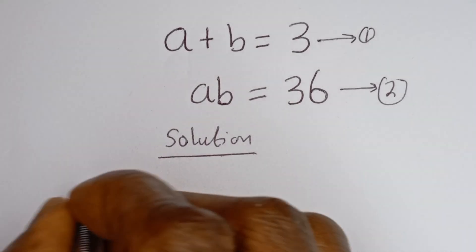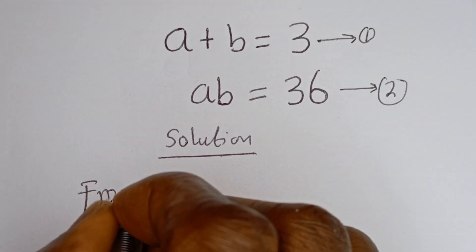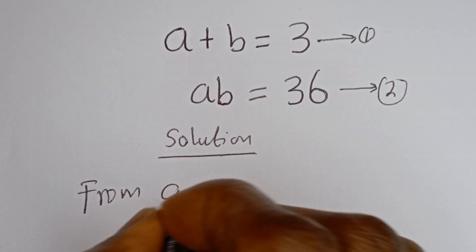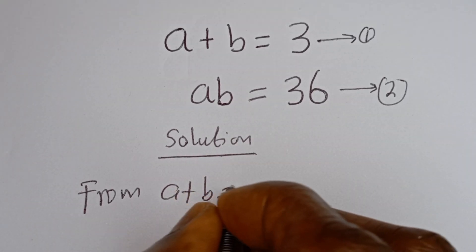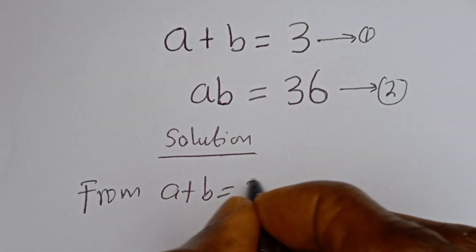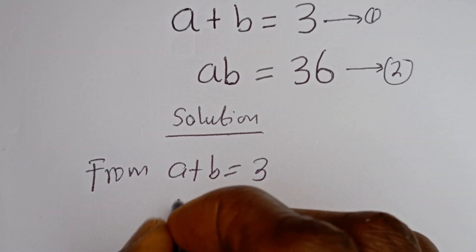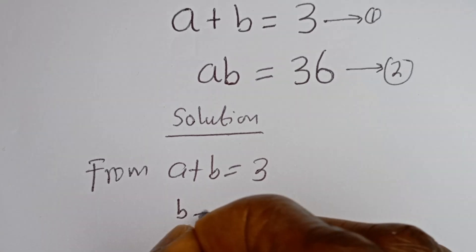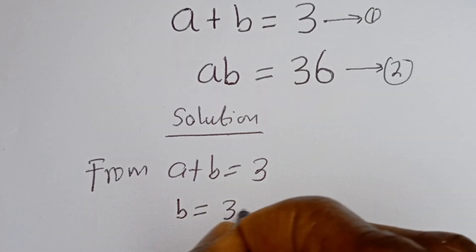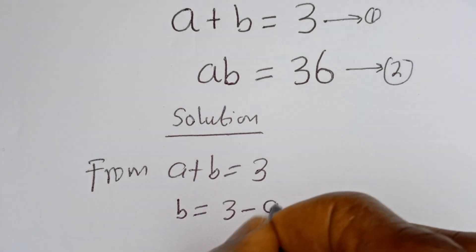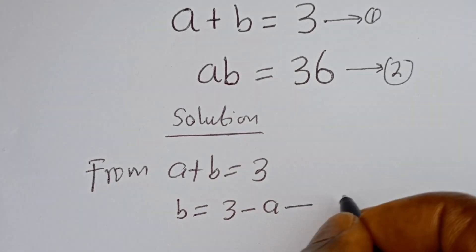Then from equation 1, A plus B equals 3, so B is equal to 3 minus A. Let's call this equation 3.